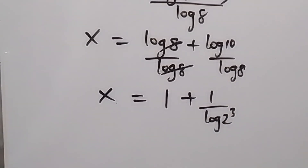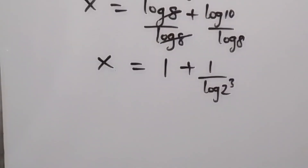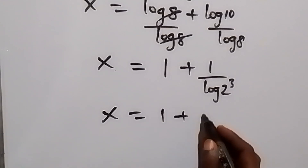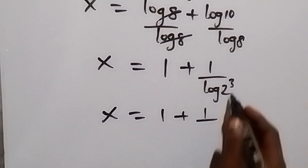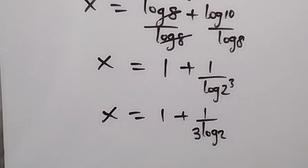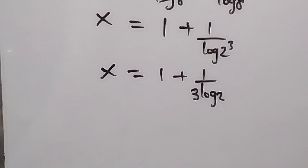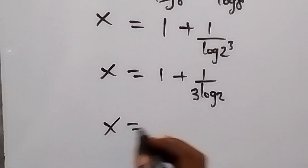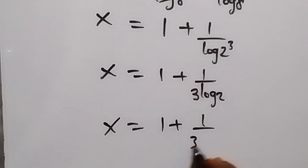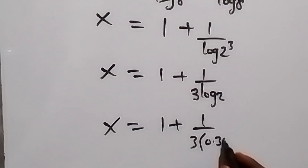Log 8 is 2 raised to the power 3, so x equals 1 plus 1 over 3 log 2. The exponent 3 comes to the front giving 3 log 2. Substituting the value of log 2, we have x equals 1 plus 1 over 3 times 0.301.